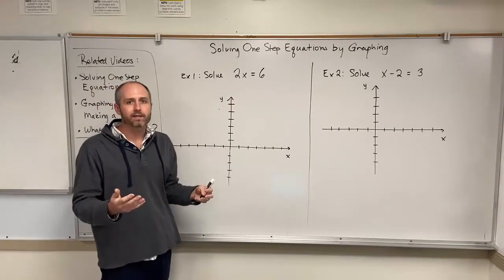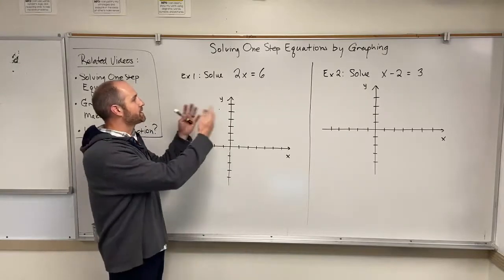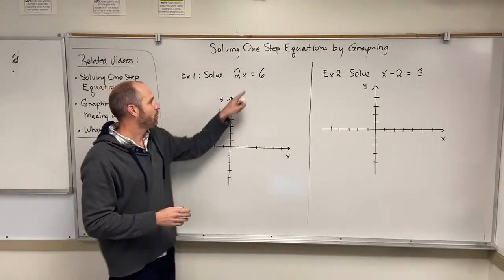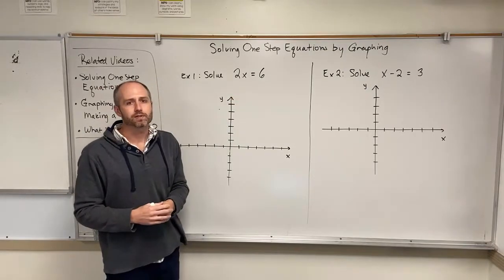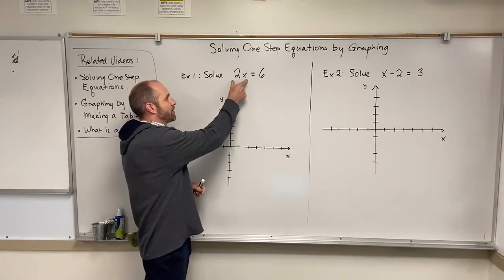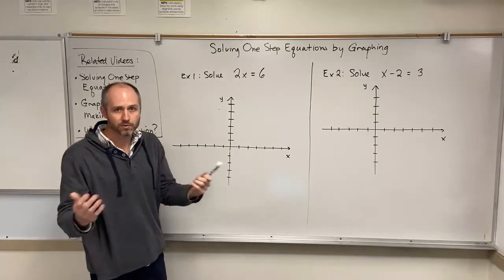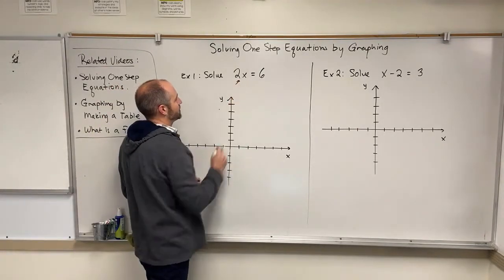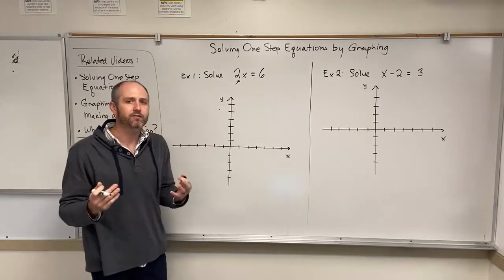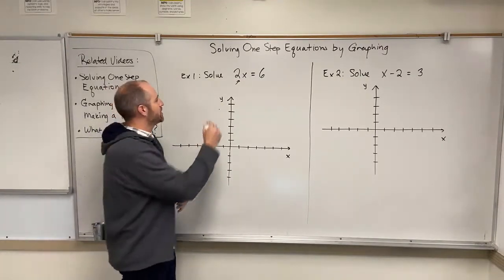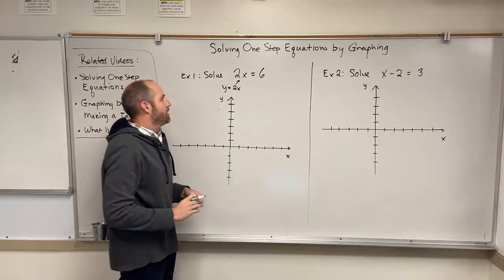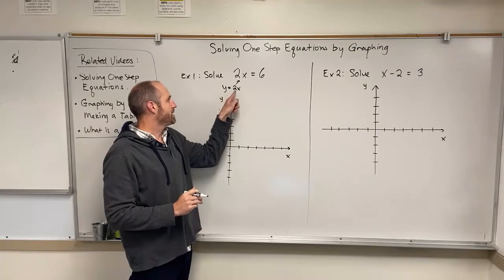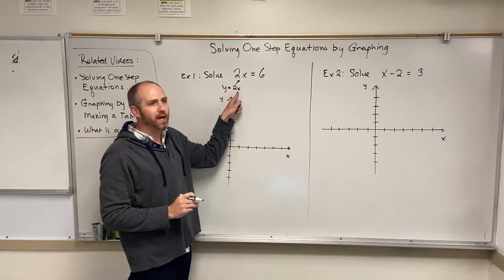Here is a way that you could visualize an equation: you can visualize an equation as the equality of two relations. On the left-hand side of this equation we have the relation 2x, which is also a function. You can think of this as y equals 2x. The value of y is going to be changing depending on what value you put for x.